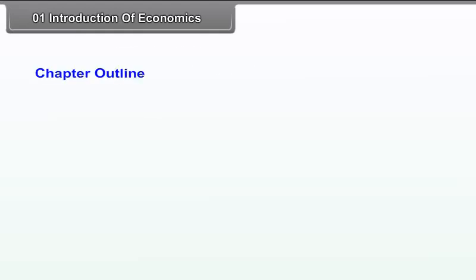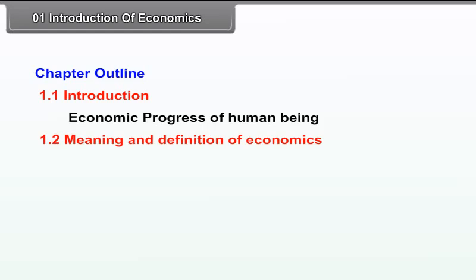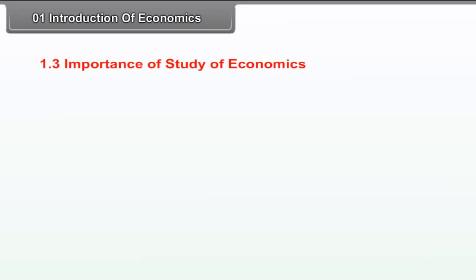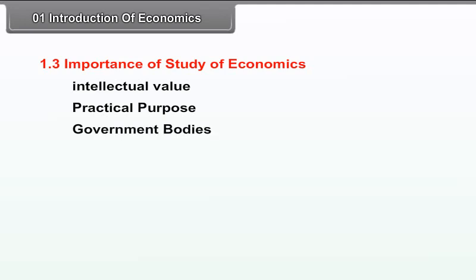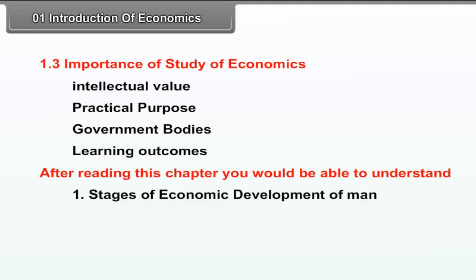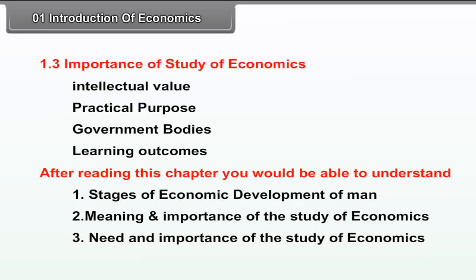Chapter 1: Introduction to Economics. Chapter Outline: 1.1 Introduction – Economic Progress of a Human Being. 1.2 Meaning and Definition of Economics – Adam Smith, Dr. Alfred Marshall, Prof. Lionel Robbins. 1.3 Importance of Study of Economics – Intellectual Value, Practical Purpose, Government Bodies. Learning Outcome: After reading this chapter, you will be able to understand the stages of economic development of man, meaning and definitions of economics, and the need and importance of the study of economics.